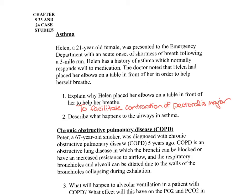Number two: describe what happens to the airways in asthma. In asthma, the airways undergo a reversible obstruction in response to a stimulus. The constriction occurs when the smooth muscles in the walls of the bronchioles start to contract, and those airways become constricted and more narrow in diameter. There can also be an inflammatory reaction in the walls of the bronchioles that results in even further obstruction.